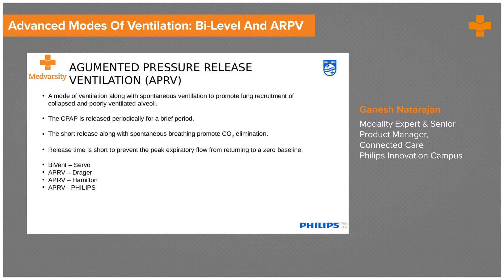The key difference between BiPAP and APRV is just the I:E ratio; conventionally the machine settings are the same. Regarding equipment names: Maquet calls it BIPVENT, while Draeger, Hamilton, and Philips call it APRV. This is a mode of ventilation that supports spontaneous ventilation and promotes lung recruitment of collapsed and poorly ventilated alveoli, because air is perfusing the alveoli for a longer period of time.